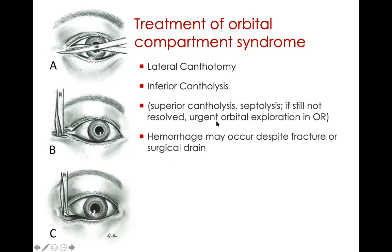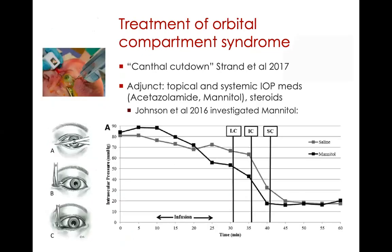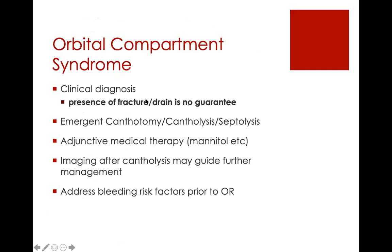If pressure is still high, consider urgent orbital exploration. The presence of a fracture or drain is not a guarantee you will not get compartment syndrome. You want to do canthotomy and cantholysis and continue to watch the pressure in the orbit. You can use adjunctive medical therapies such as mannitol to decrease overall pressure and swelling in the orbit. You can get imaging after cantholysis to help guide further management, but you don't want to wait in the CT scanner while the optic nerve is not getting perfused.